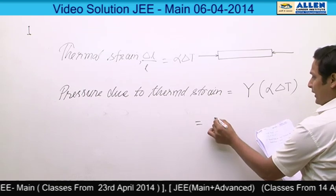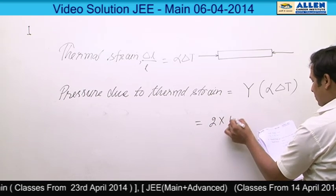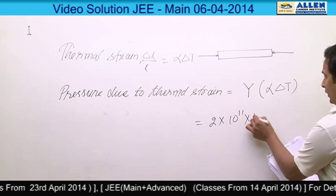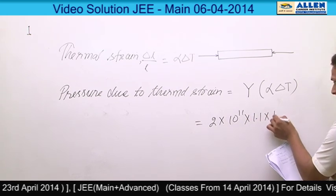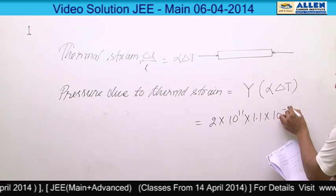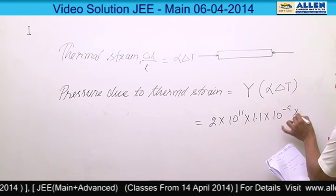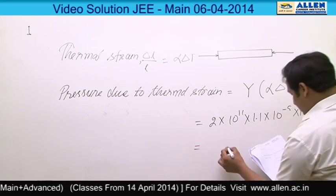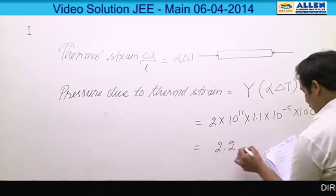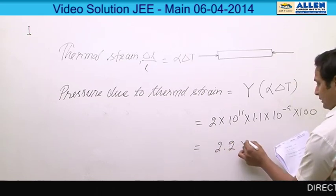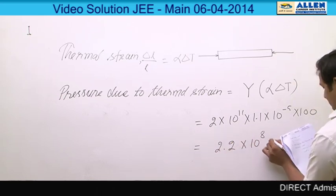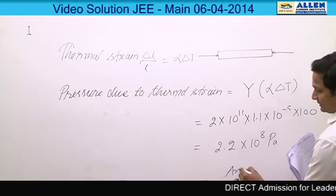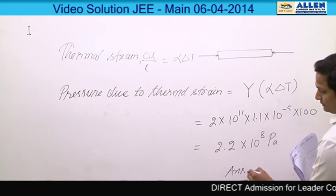Putting the values: Y is 2×10¹¹, alpha is 1.1×10⁻⁵, and delta T is 100. After solving, you will get the answer 2.2×10⁸ Pascal. Hence the answer is option 3.